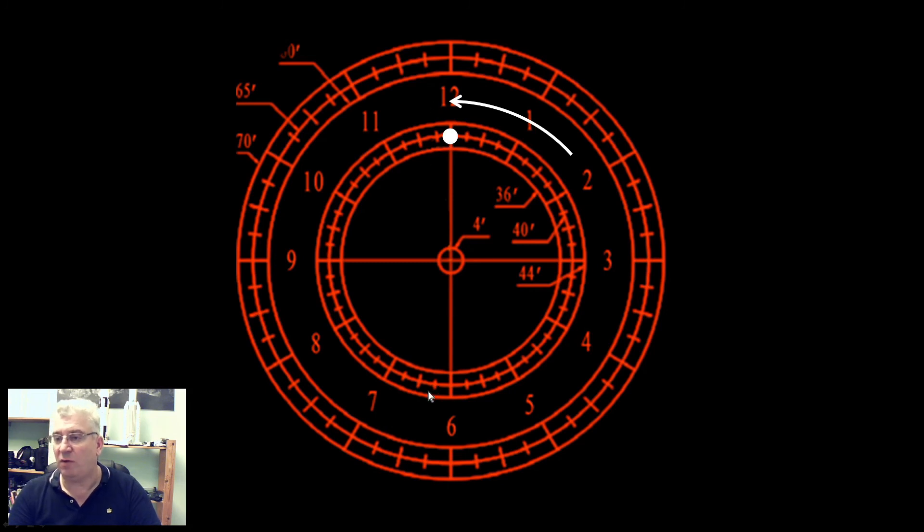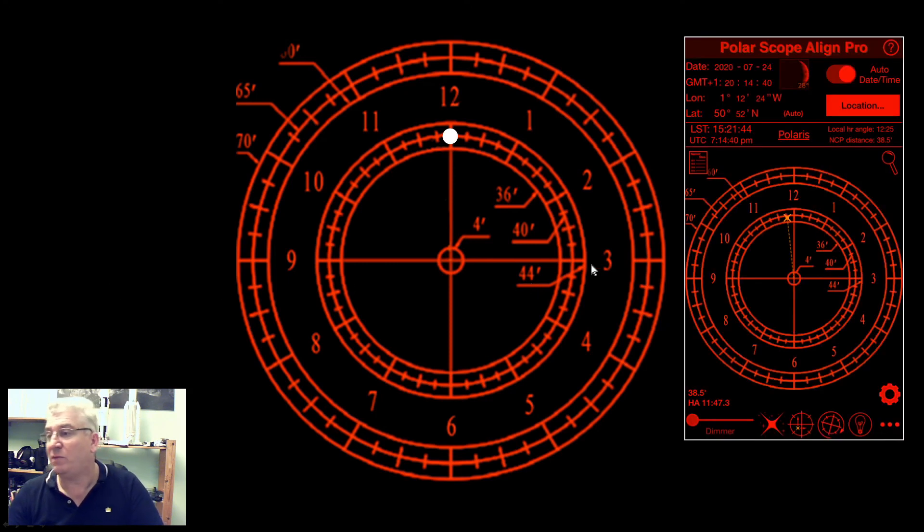We've now got that's ensuring that this line here is vertical and aligned with the elevation axis. So now we then refer to the app. We see where Polaris needs to be. In this case, it's not actually a big move from where it already is, but it could be anywhere around the circle. We make adjustments to the altitude and azimuth bolts to move Polaris into the correct position. Once that's done, we are polar aligned. So long as we don't disturb or jog the mount, we're good to go and we will be able to track the stars.